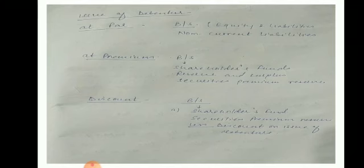From an MCQ point of view, keep this in mind: if debentures are issued at a discount, the discount is a loss for the company. It is recorded in the balance sheet under shareholders' funds heading, sub-heading — we reduce securities premium reserve by the discount on issue of debentures, because this is a loss for the company.